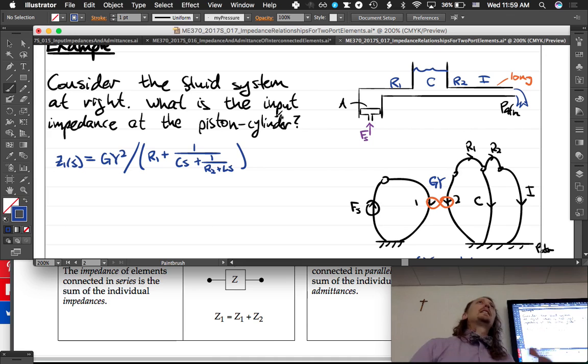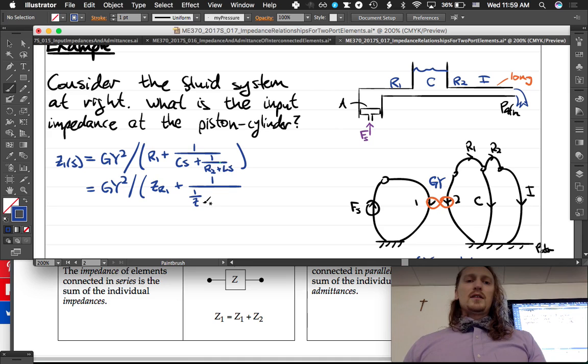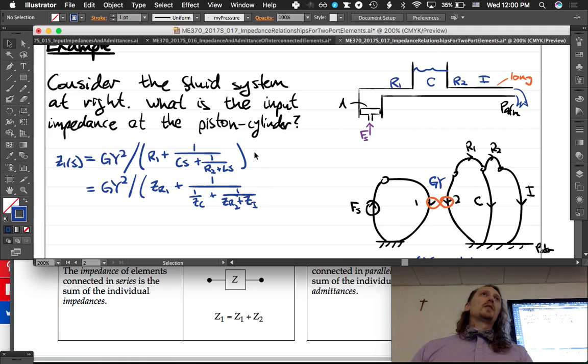And if you guys find taking that, like, too many steps at once difficult, I encourage you to just, instead, write this expression like this. GY squared divided by, and you would say, okay, ZR1, whatever the impedance is of R1, plus, it's going to be these in parallel, so it's 1 over, and it's going to be 1 over ZC plus 1 over, and then it's the series of R2 and I, so you would say ZR2 plus ZI, right? And then you could plug in what ZR1 is, ZC, ZR2, etc., and get this expression. But if you want to do it in two steps, or multiple steps, that makes sense.